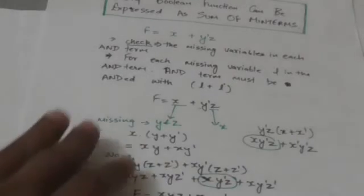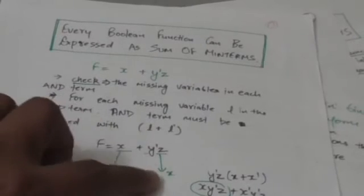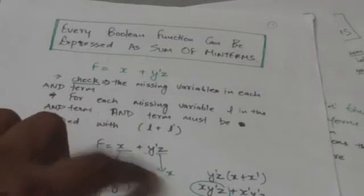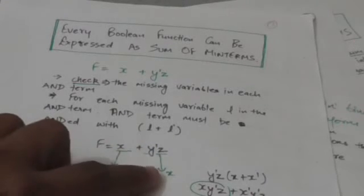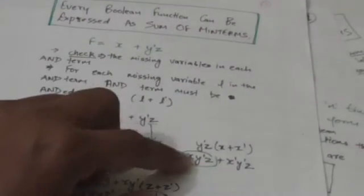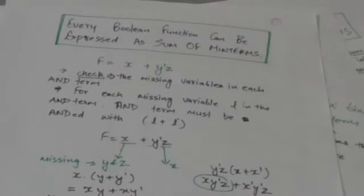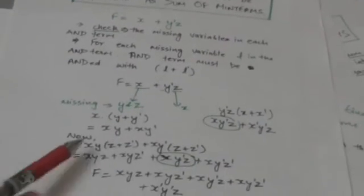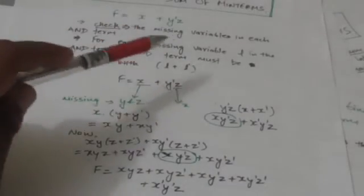Now look at the term y'z — the binary variable x is missing from this term. So we will AND this term with (x + x'), which gives xy'z + x'y'z. In function f, we will replace x by the expanded terms and y'z by these two terms.